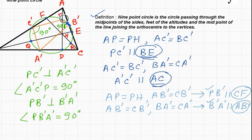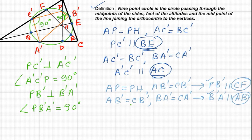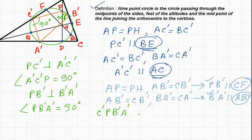We can easily see that these four points must become cyclic because the sum of opposite angles comes out to be 180 degrees. So C dash, P, B dash, A dash form a cyclic quadrilateral and must lie on the same circle. Similarly, we can prove that C dash, B dash, R, A dash are also cyclic, lying on a circle.